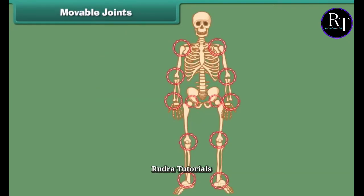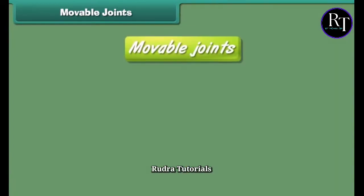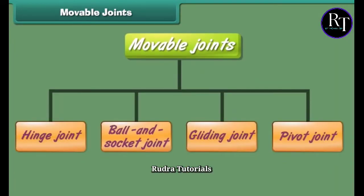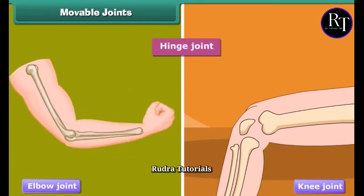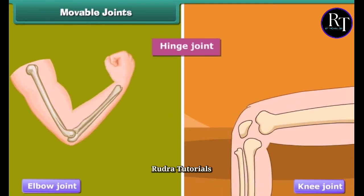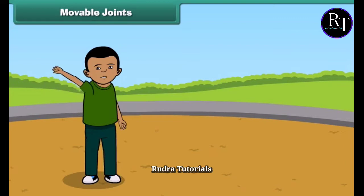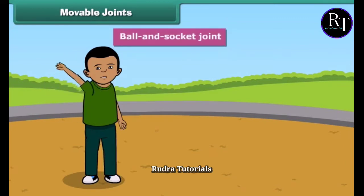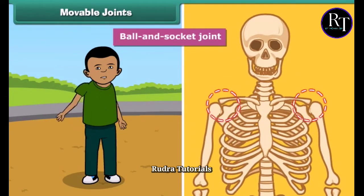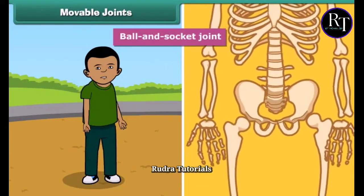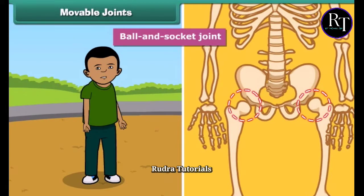Most movable joints allow free movement of the body parts, whereas in some joints only a little movement is possible. Moveable joints are grouped into four types on the basis of movement. Hinge joints can be bent in only one direction — for example, the elbow joint and knee joint. The joints which join the bones to make circular movement possible are called ball and socket joints. For example, the bone in the upper arm is fitted to the shoulder bone, and the thigh bone is fitted to the hip bone, both by ball and socket joints.